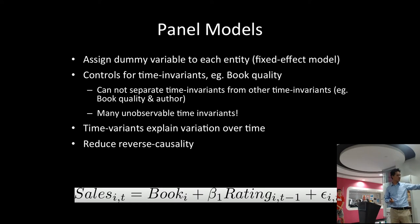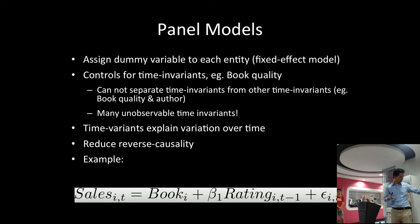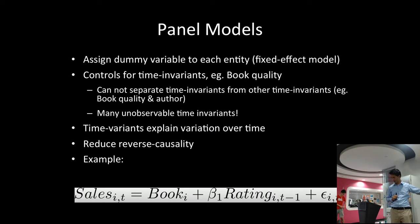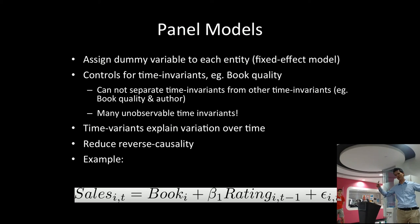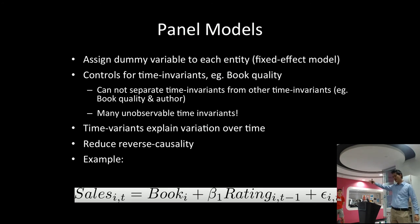This also reduces reverse causality, especially when you use something like a lag — sales of book i at time t is a function of a dummy for book i and the ratings at time t minus 1. So if there are N books you'll have N minus one dummies, capturing all time-invariant factors. And then we focus on what's time-varying, like ratings. This gives us an easy takeaway. The panel model that most packages support handles this well.